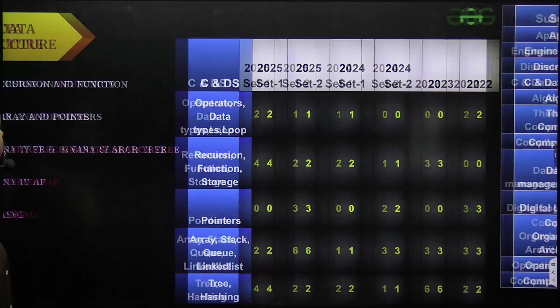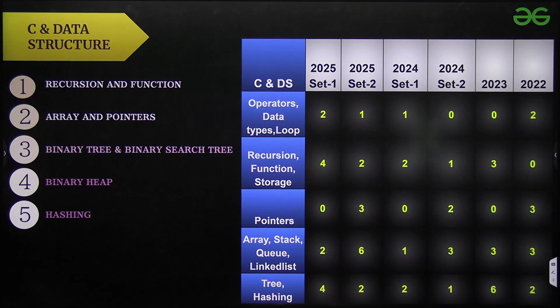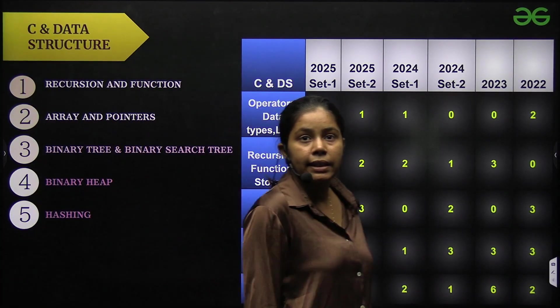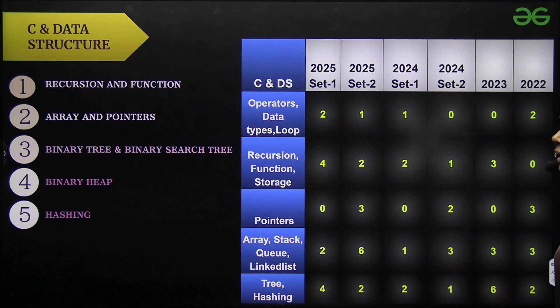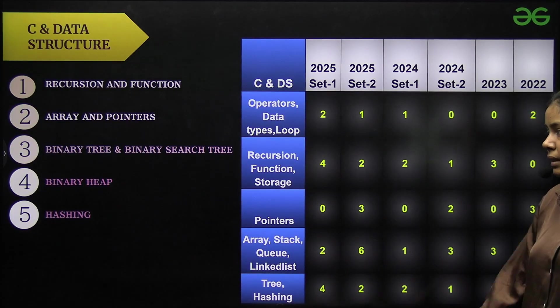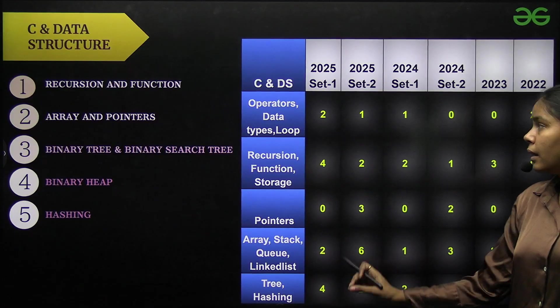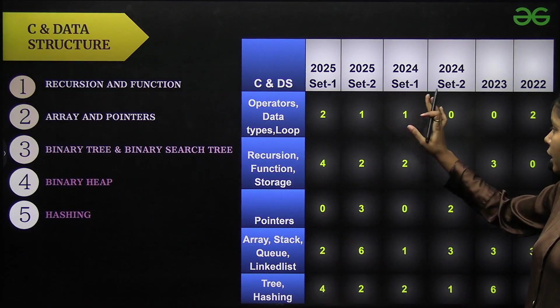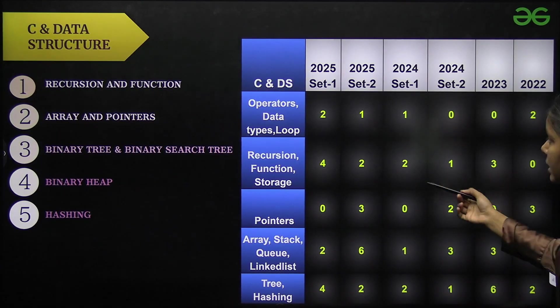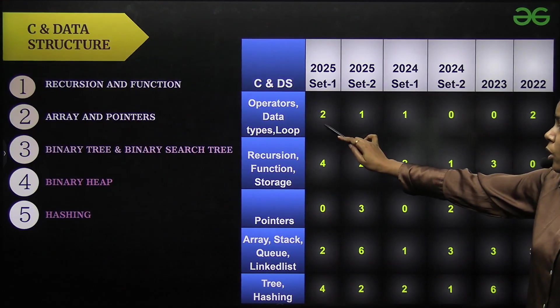Now next I have is C and data structure. In this C and data structure you have the topics: recursion and function, array and pointers, binary tree and binary search tree, binary heap, hashing. These five topics are very important.